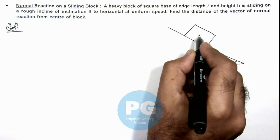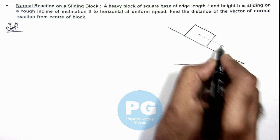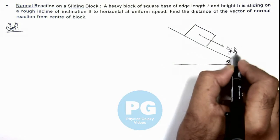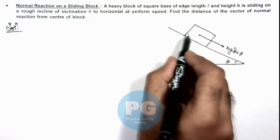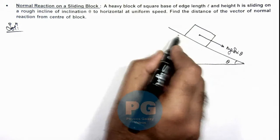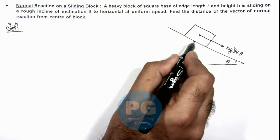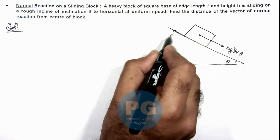Then it'll be sliding due to the component of its weight mg sin theta which will act along the incline. And due to this mg sin theta, as the inclined plane is rough, it'll be experiencing a friction in backward direction.